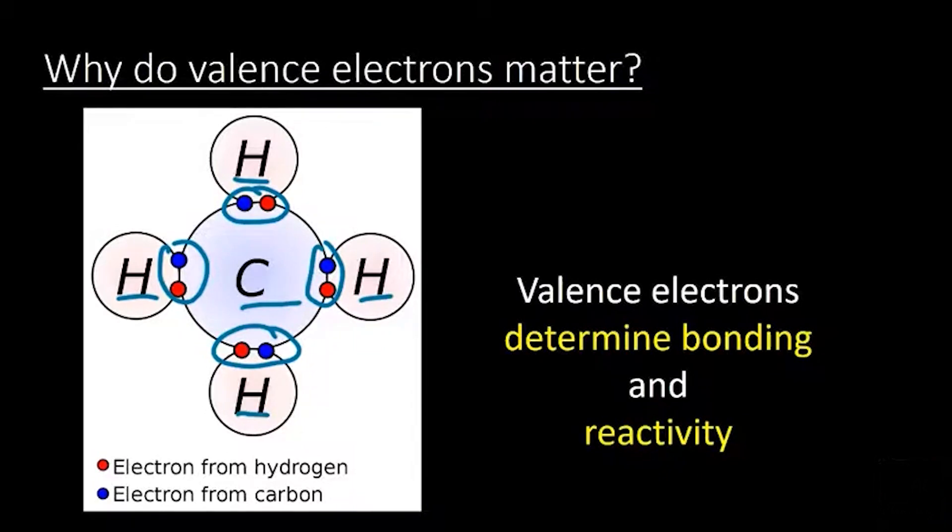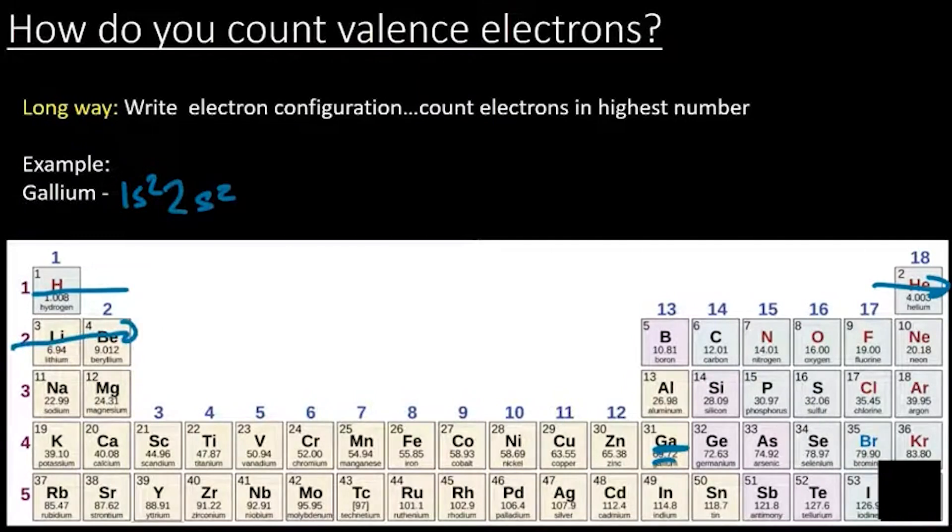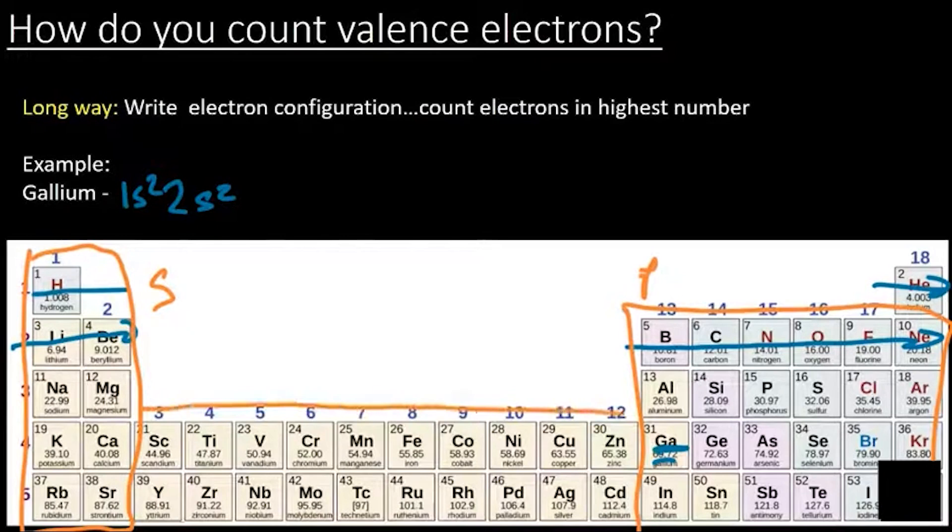So now, given that we know why they're important and what they are, how do you count them? Well, first, the long way is you could write out the electron configuration. So for gallium, which is right here, we would write out 1s2. Remember, we're going along the top of our periodic table from left to right. And first we go through the 1s2 and then the 2s2. And then we go through the p block. So one thing to remember, and it's important in just a second, is that all of this periodic table is divided into different blocks. So here we have our s block, and here we have our p block, and then down here in between we have what's called our d block. And so as we pass through boxes of those different parts of the blocks, we add electrons to different parts of our electron configuration.